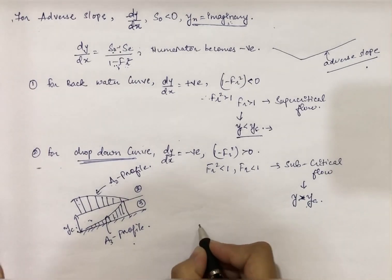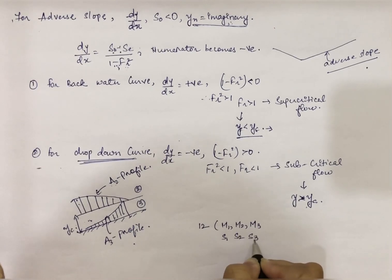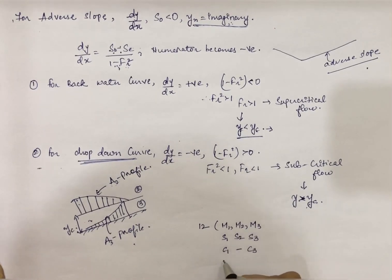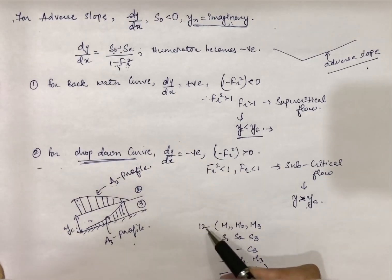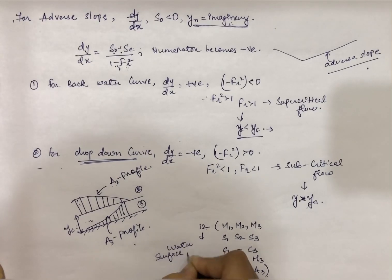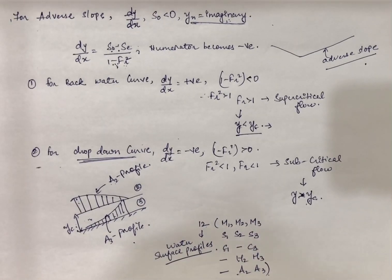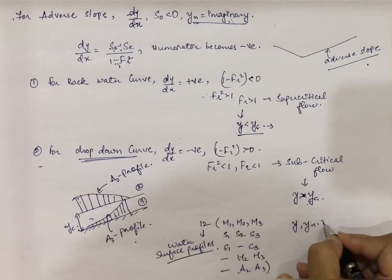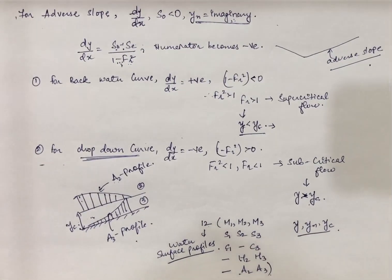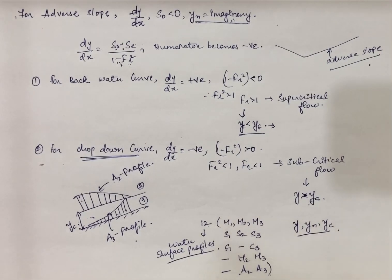So here we have completed all 12 water surface profiles: M1, M2, M3, S1, S2, S3, C1 (C2 does not exist), C3, H1 (does not exist), H2, H3, A1 (does not exist), A2, and A3 — giving us 12 total profiles. These are determined by comparing the actual depth of flow against the normal depth and critical depth. I hope you are now able to identify which kind of profile it is from this theory. Thank you.